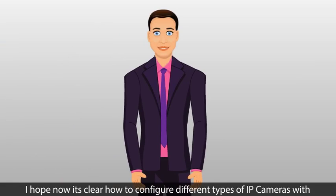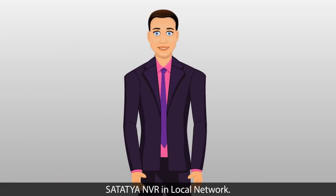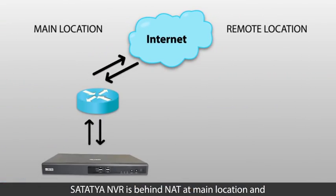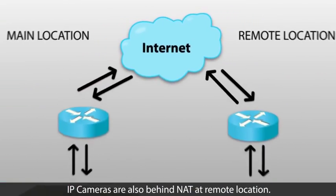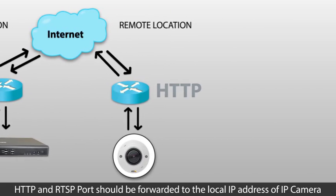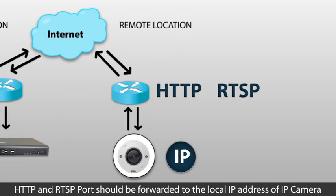I hope it's now clear how to configure different types of IP cameras with Satatcha NVR in a local network. Scenario 2: Satatcha NVR is behind NAT at the main location and IP cameras are also behind NAT at the remote location. In this case, HTTP and RTSP ports should be forwarded to the local IP address of the IP camera in the router of the remote location.